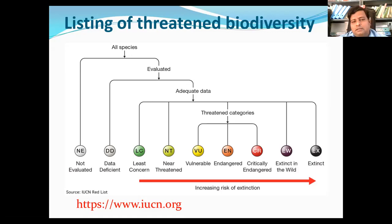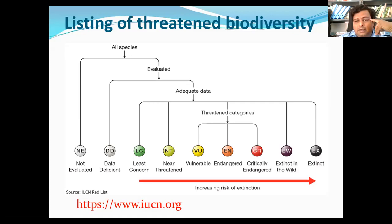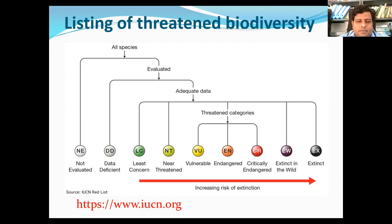Critically Endangered, designated CR, also comes under the threatened category. It contains those species that possess an extremely high risk of extinction as a result of a population decline of 80% to more than 90% over the previous 10 years or three generations. The current population size considered is 50 individuals or fewer.